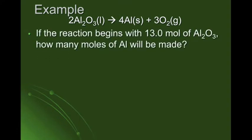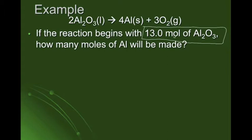Let's look at a problem: if the reaction begins with 13 moles of aluminum oxide, how many moles of aluminum will be made? The main thing is to circle or box the important values. We have 13 moles of aluminum oxide — that's what the problem gives us. What it wants is moles of aluminum. So: this is what we have, this is what we want.